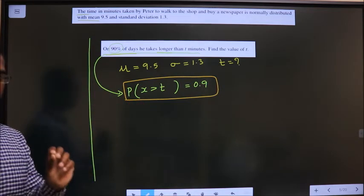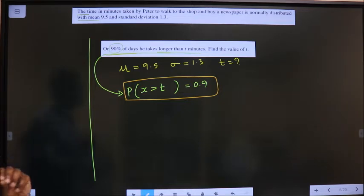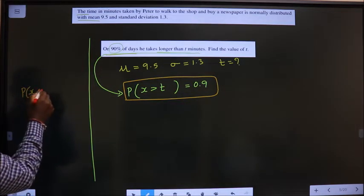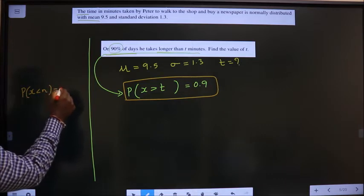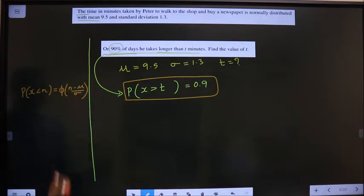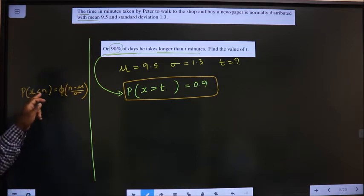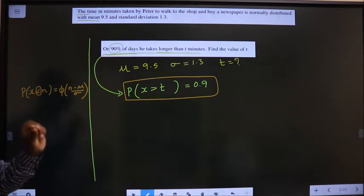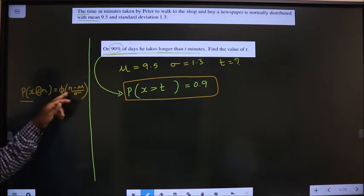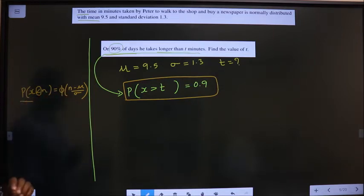Now, in any normal distribution sum, we make use of this: P of X less than N is nothing but phi of N minus mean by standard deviation. Whenever here it has to be less than symbol, then only probability will get changed to phi of N minus mean by standard deviation.